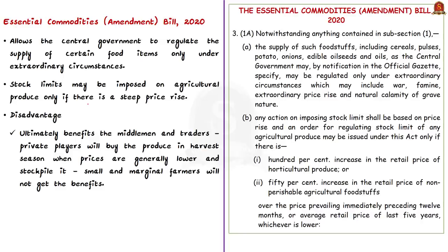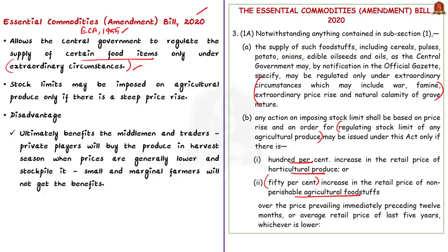The third bill, the Essential Commodities Amendment Bill, amends the Essential Commodities Act of 1955. It allows the central government to regulate the supply of certain food items only under extraordinary circumstances such as war, famine, extraordinary price rise, and natural calamity. Food items regulated include cereals, pulses, potato, onions, edible oil, seeds and oils. Stock limits may be imposed on agricultural produce only if there is a steep price rise, such as a 100% increase in retail price of horticultural produce. The fear is that this bill ultimately benefits middlemen and traders, since private players will buy produce in harvest season when prices are low, stockpile it, and release it when prices are high — so small and marginal farmers will not get the benefits.